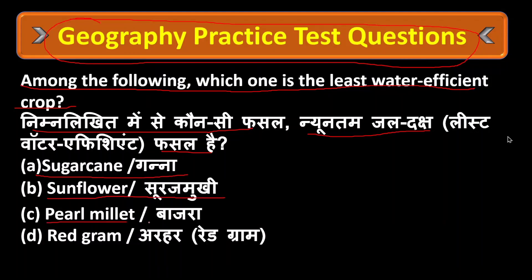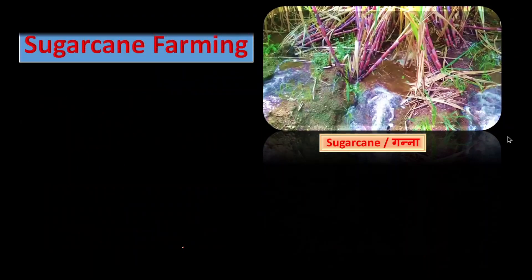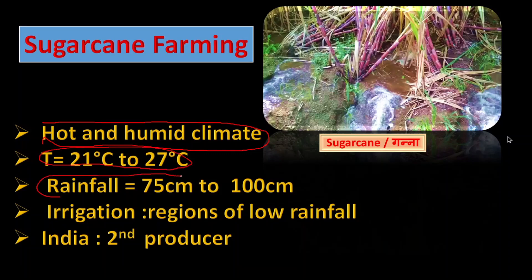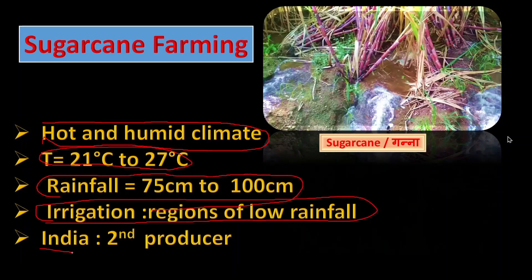Sugarcane is a tropical as well as sub-tropical crop. It grows in hot and humid climate. The temperature required is 21 to 27 degree Celsius. Annual rainfall required is between 75 centimeter to 100 centimeter. Irrigation is required in the presence of low rainfall.